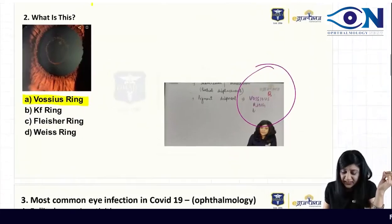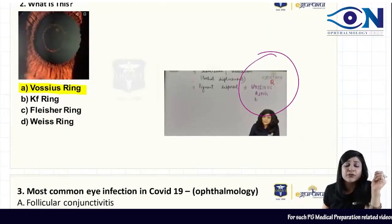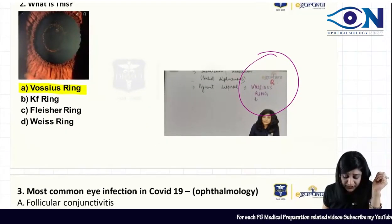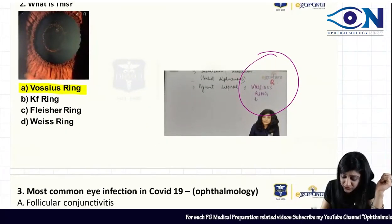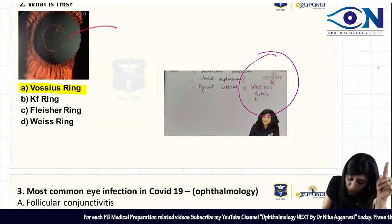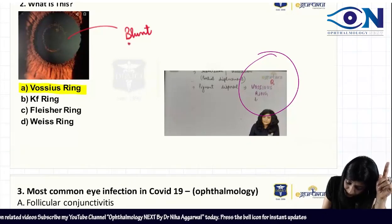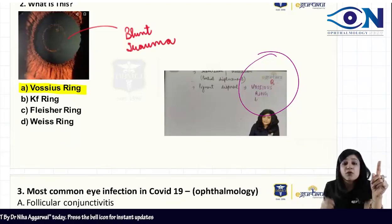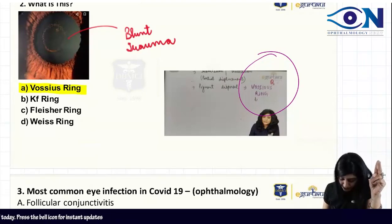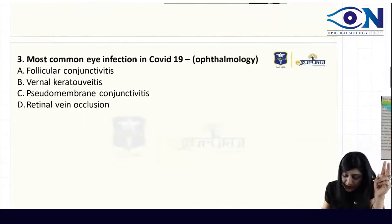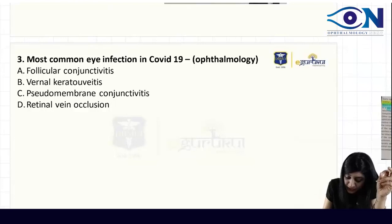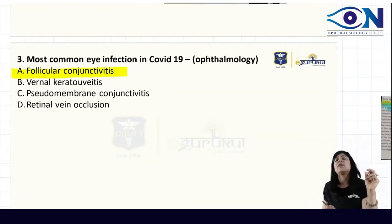This is a direct image from the classroom — this is your Vocius ring. I have given you this topic: blunt trauma. You have to read this topic — Vocius ring from blunt trauma. The most common eye infection in COVID is follicular conjunctivitis, though COVID is not that important now.